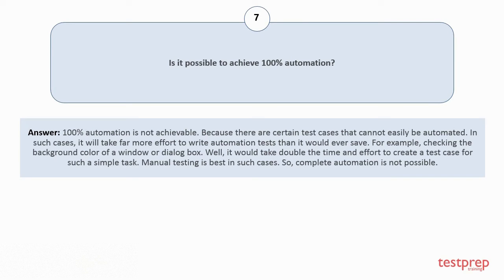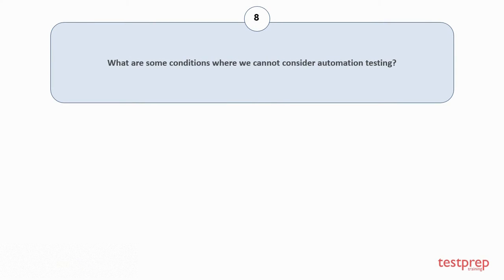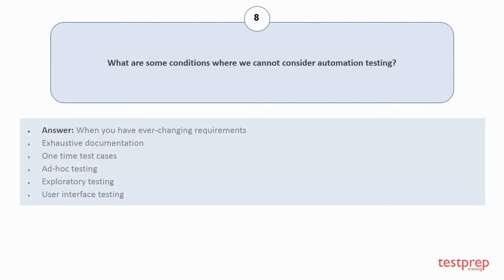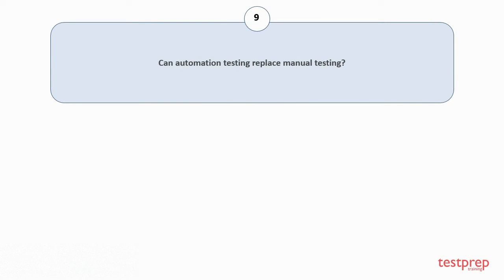Question number eight: What are some conditions where we cannot consider automation testing? One, when you have ever-changing requirements; two, exhaustive documentation; three, one-time test cases; four, ad hoc testing; five, exploratory testing; six, user interface testing.